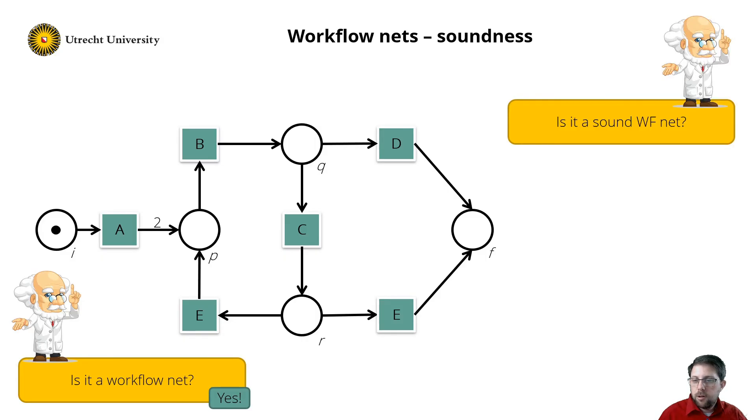Well, let's play the token game. So I fire transition a, gives me two tokens in place p. I can fire transition b, which gives me one token in place q and one in place p. And I can fire transition d, which gives me one token in place p and one token in place f. But now proper completion does not hold. Because I have a token in both place p and f, which is more than just an f. Hence, the workflow net is not sound.